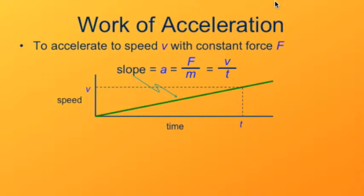By Newton's second law, we know that the acceleration is the net force divided by the mass. By the definition of acceleration, we know that it's the change in velocity divided by the change in time. In this particular case, that's v over t. The area under this graph is the distance traveled.